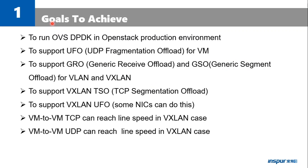Here are our goals to achieve. We need to run OVS DPDK in OpenStack production environment. We need to support UFO for VM. We need to support GRO and GSO for VLAN and VXLAN. We need to support VXLAN TSO and VXLAN UFO. Finally, we hope VM-to-VM TCP and UDP can both reach line speed in the VXLAN case.